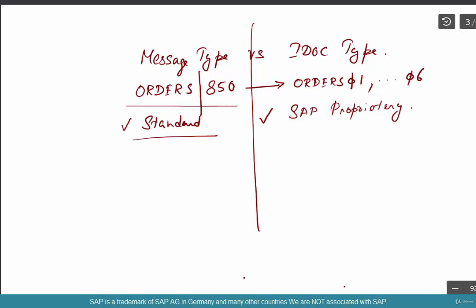Message is what every system should understand - that's a message type. And an IDOC type is something only SAP can understand.